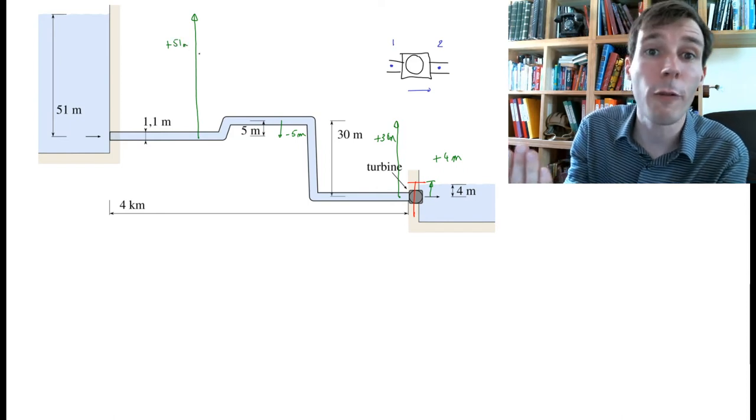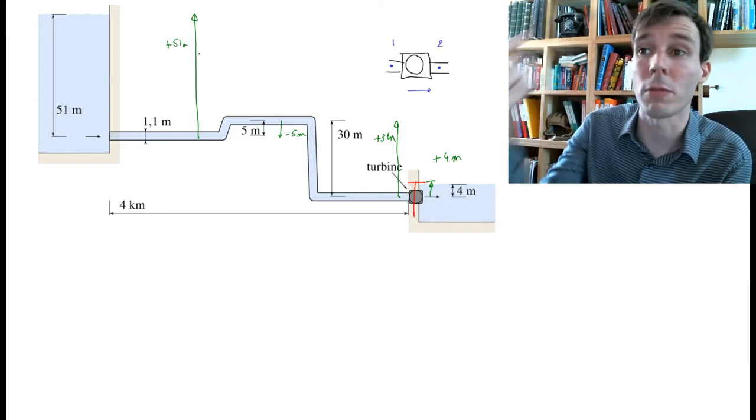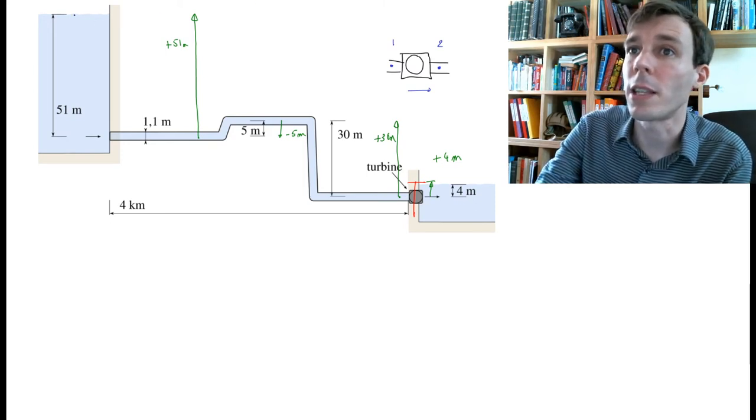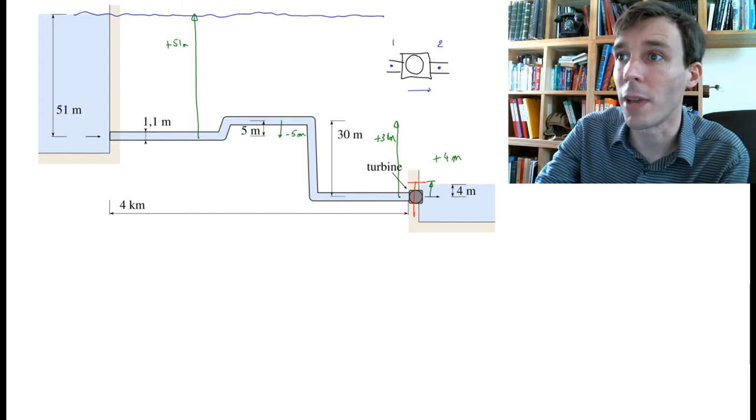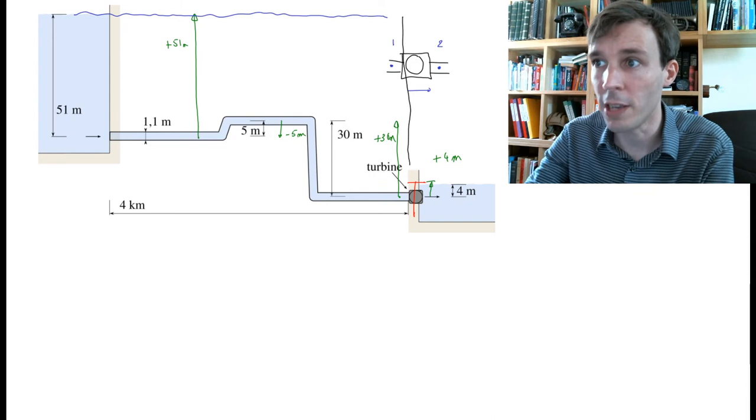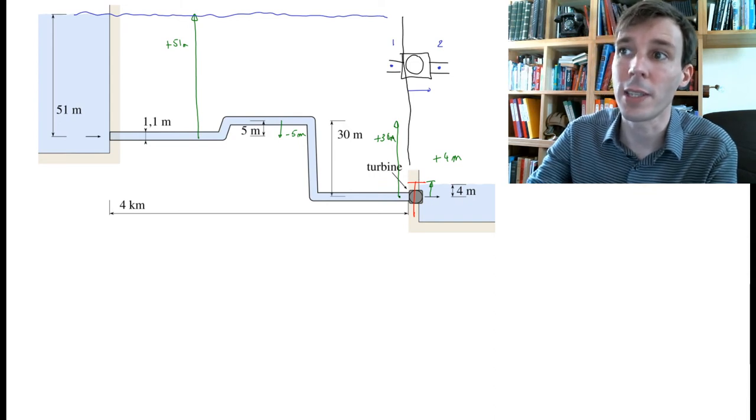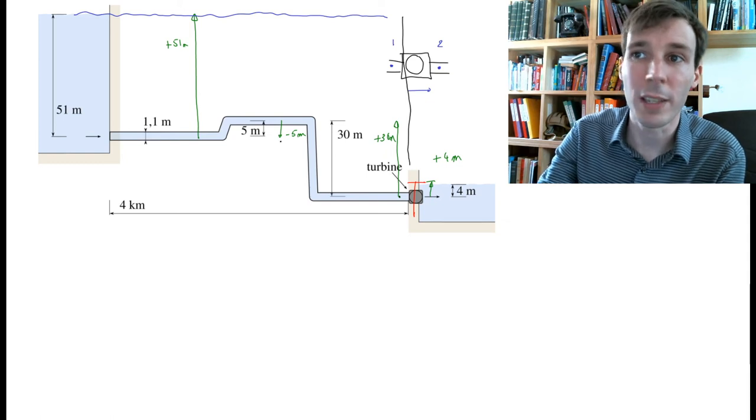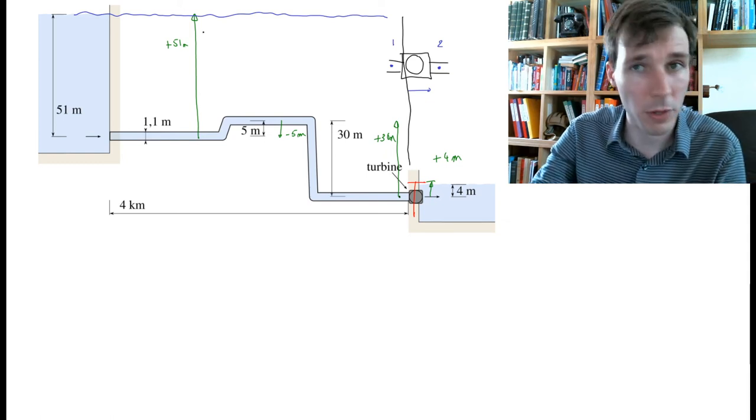So basically, how far away do you have to swim up to the surface? The basic principle here is that the pressure at point 1 is exactly the same as if we had a big tank and we were just deep inside that tank, at 30 minus 5 plus 51 meters away from the surface.